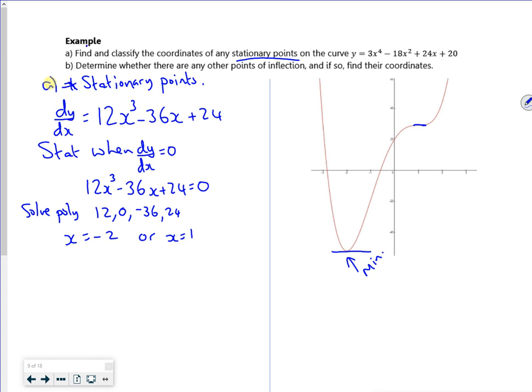We need to find the coordinates. If I substitute x = -2, I get y = -52. And if I substitute x = 1, I get y = 29. So I've got my coordinates.